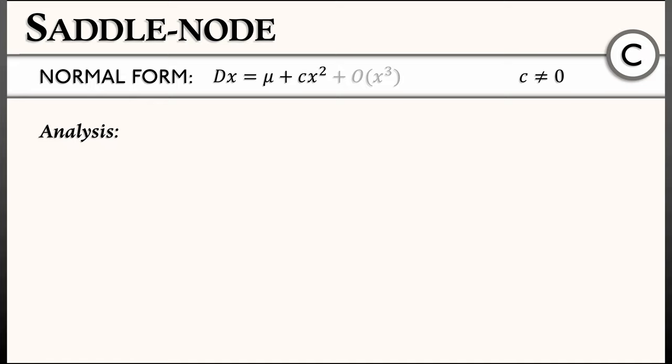Where are the equilibria? Set that equal to 0. Solve for x. x is plus or minus square root of negative mu divided by c. So clearly, the equilibria depends on mu depends on c.